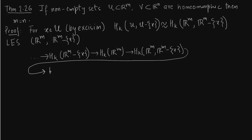We should instead take reduced homology groups, then we don't have the headache of checking in dimension zero, because if we are not taking reduced homology groups it will be non-zero in dimension zero, and that will create a lot of problems. So let us just use reduced homology — then life will be easy.